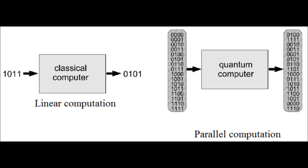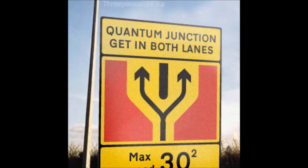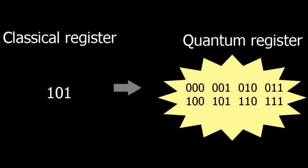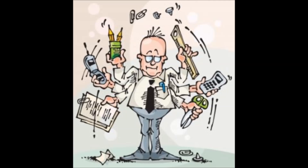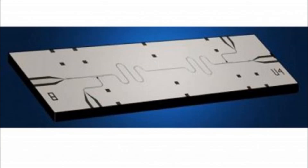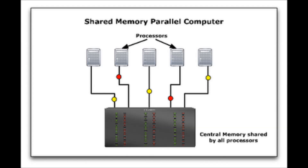One method in quantum computing is quantum parallelism — a distinct method in which a quantum computer is able to perform two computations simultaneously. For quantum computers, a single quantum processor is able to perform multiple computations at once by utilizing qubits, which exist simultaneously in multiple states. For classical computers, there are several processors linked together for parallel computing, where each processor performs one computation at a time.